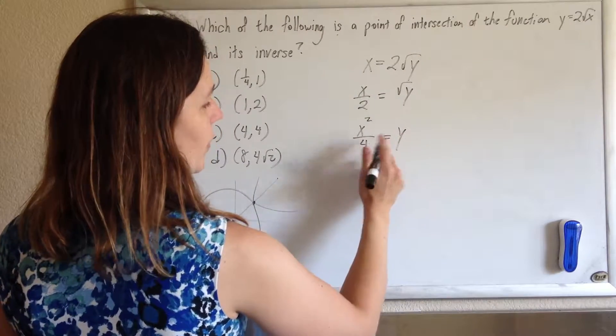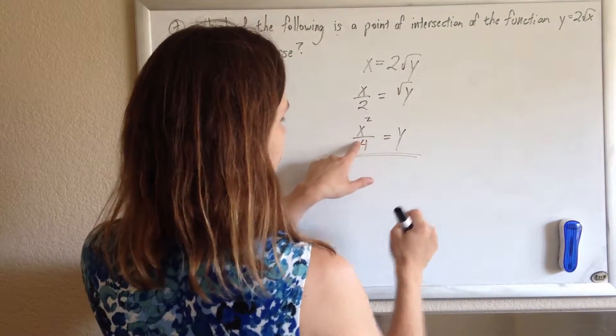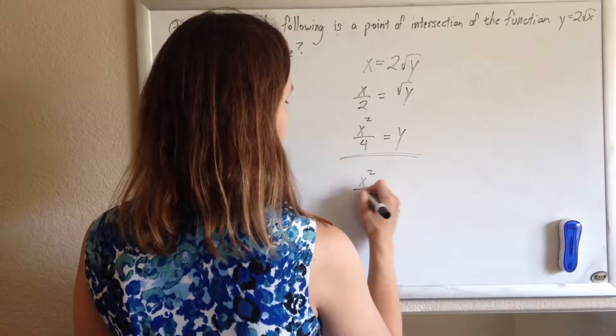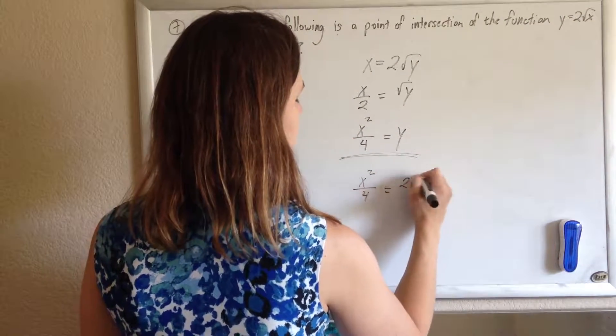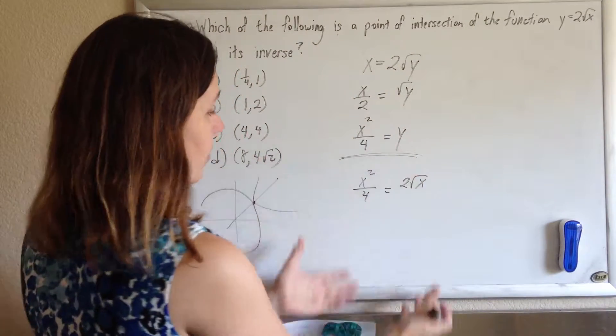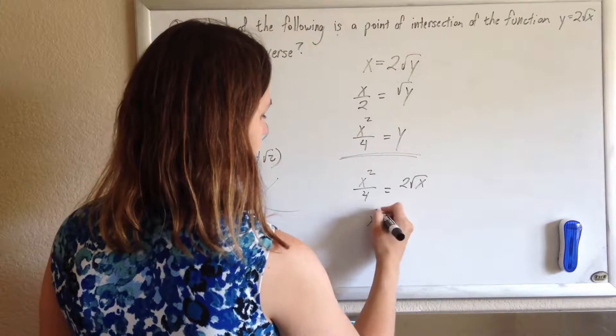And so, if I want to find out where this meets that, I want to find out where those y values equal each other. So, I'm going to set x squared over 4 equal to 2 root x. And now I'll just solve for this intersection. So, I multiply both sides by 4.